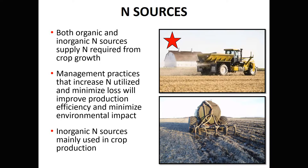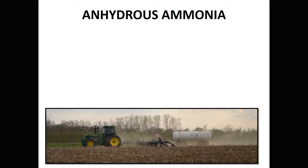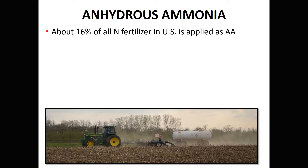Here in the Midwest, and for any area in commercial corn production, inorganic sources of nitrogen are primarily used. The first source I want to visit about is anhydrous ammonia. In natural atmospheric conditions, it exists as a gas. We have to either pressurize it or cool it because anhydrous ammonia boils at minus 28 degrees Fahrenheit.